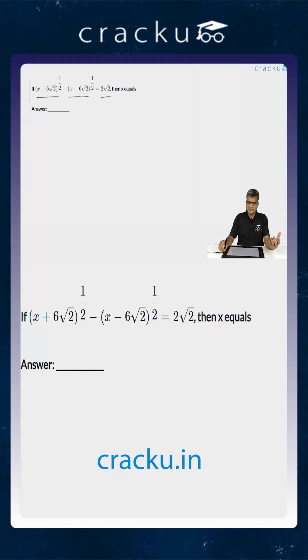So when you are getting this kind of square roots, let us first simply square the entire expression. So we are going to get x plus 6 root 2 plus x minus 6 root 2 minus 2 times square root of x plus 6 root 2 into x minus 6 root 2, which will be x square minus 6 root 2 whole square which is 72.